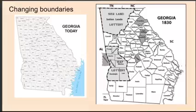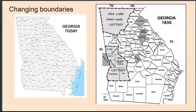Ancestor locations were also affected by changing boundaries, because county boundaries have changed many times. The original counties in a state were usually very large. As the population in a county increased, the original counties were divided into many smaller counties. An ancestor may have stayed in the same place yet lived in several counties during his or her lifetime. As a result, you'll have to look in several counties to find that ancestor's records, such as deeds and wills. You'll need to know when the county was created and from which county or counties it was formed.